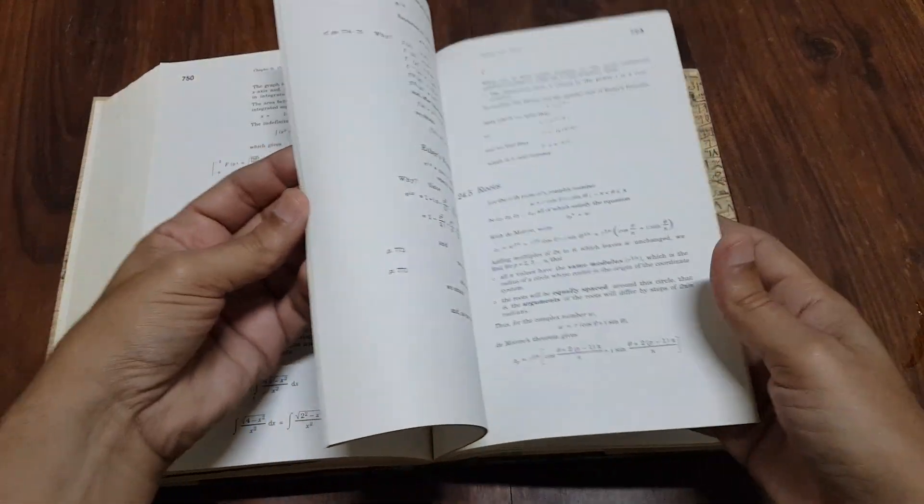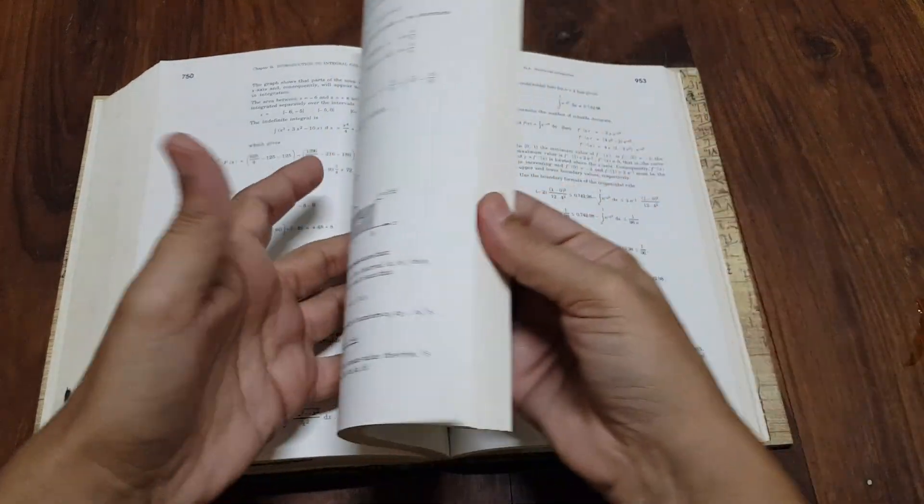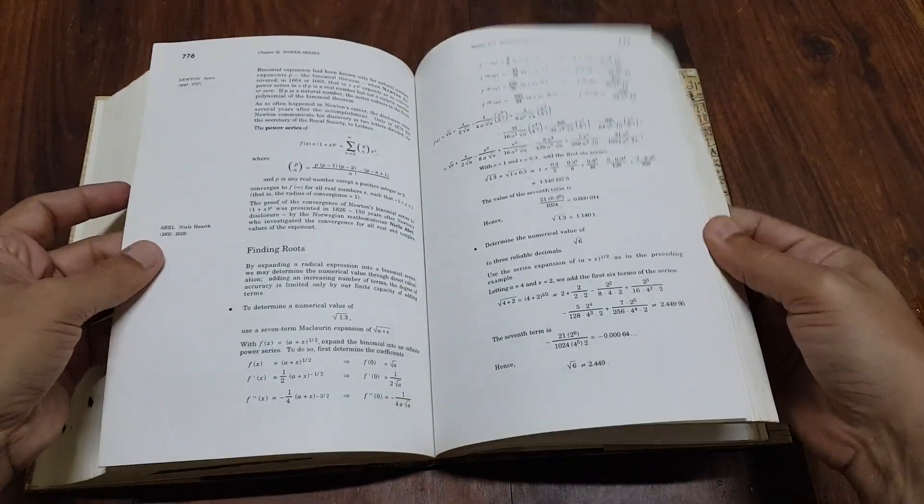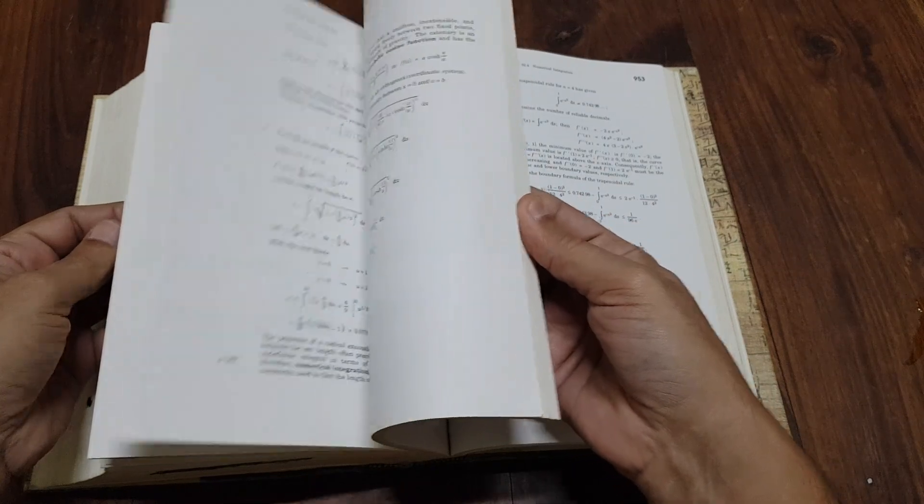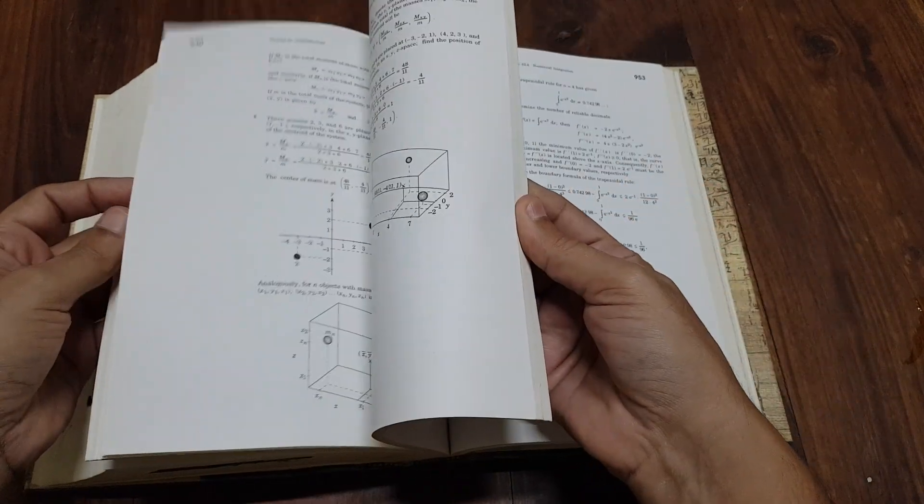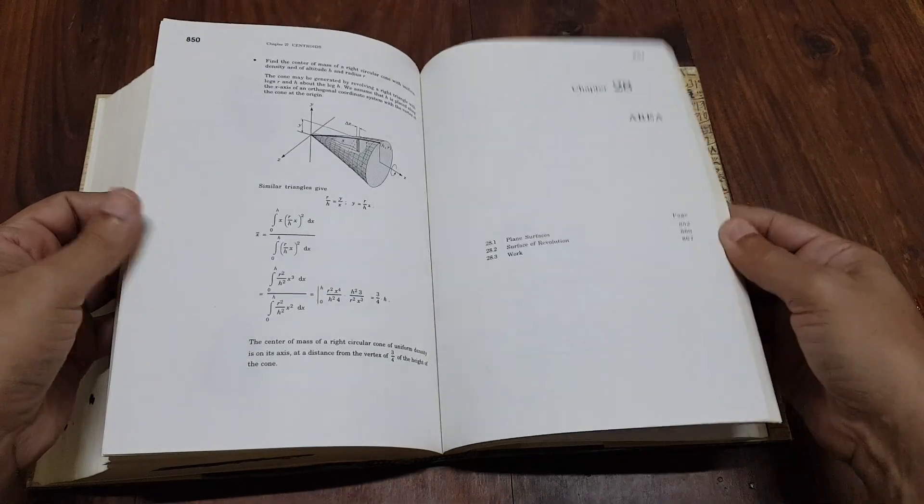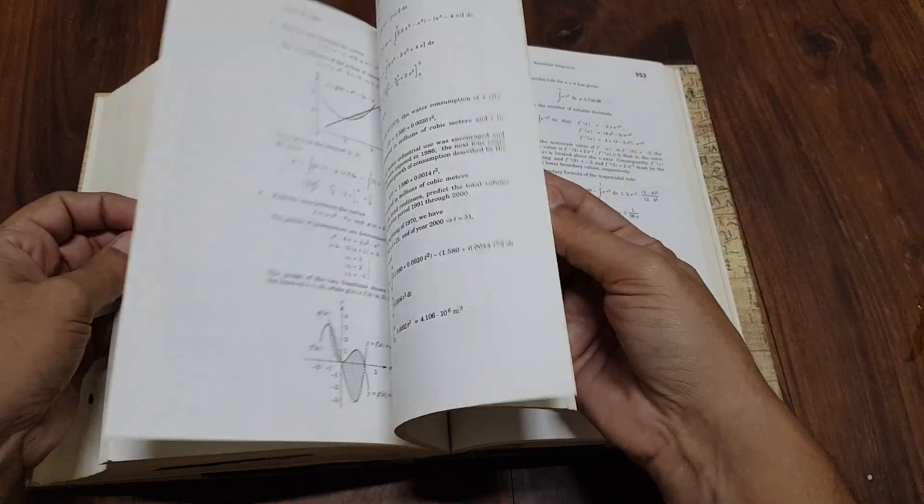User reviews. Readers generally appreciate the book's scope and the author's ability to make complex topics accessible. Some reviews mention the book's length and the potential for overwhelming detail as drawbacks.